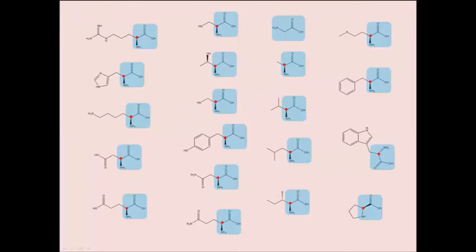Here is a list of the 20 amino acids with the red dots representing the asymmetric carbon. Every amino acid has an asymmetric carbon except for glycine. Glycine is the most simple amino acid and does not have a variable side chain. The side chain group of every other amino acid is different from one another. It is the side chain that determines the chemical properties of each amino acid.